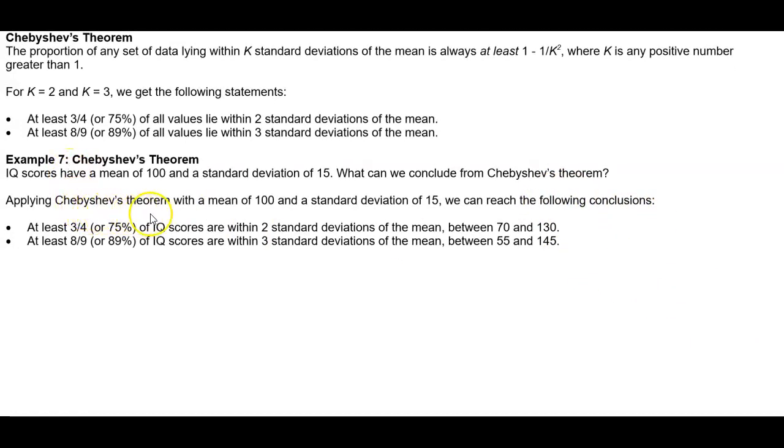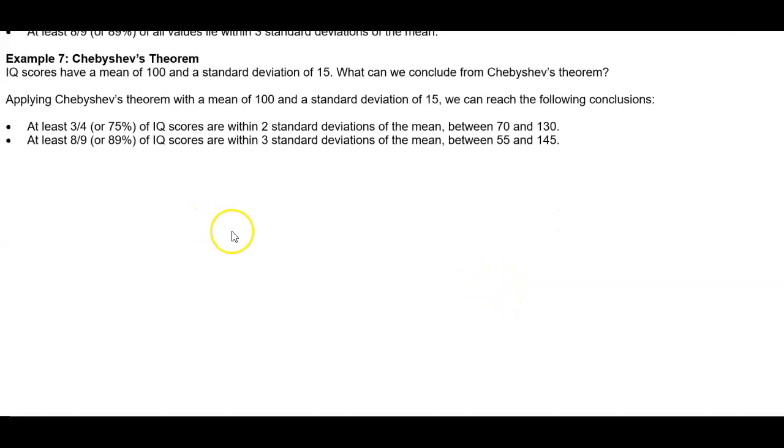Applying Chebyshev's theorem with a mean of 100 and a standard deviation of 15, we can reach the following conclusion. At least 3 fourths, or 75%, of IQ scores are within two standard deviations of the mean between 70 and 130. Remember the mean is 100, and two standard deviations of the mean are 70 and 130.